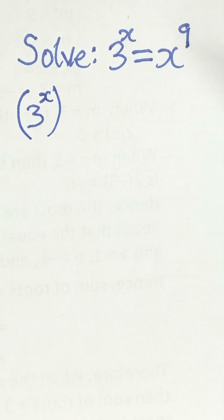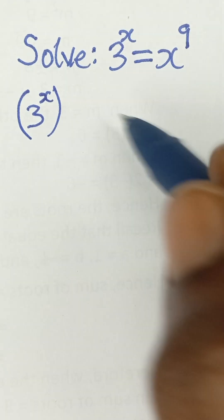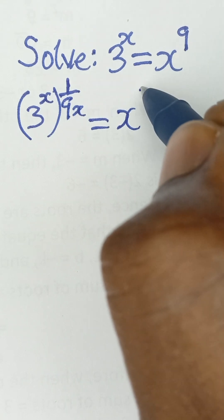9 multiplied by x is 9x. So we raise it to the power 1 over that 9x, and that will be equal to x raised to the power 9.